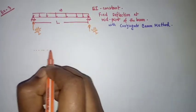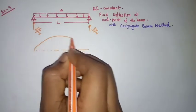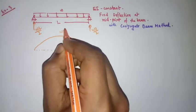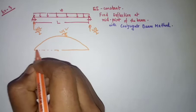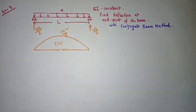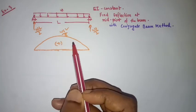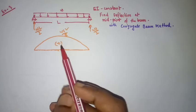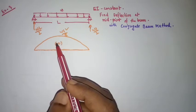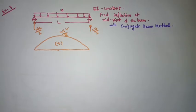If I draw the moment diagram of this one, it will be kind of like this. This is ωL²/8 and this is positive. We know for the conjugate beam method we just transfer this moment diagram into M/EI format. But look — this shape is not linear, so the area calculation for this one is not easy.